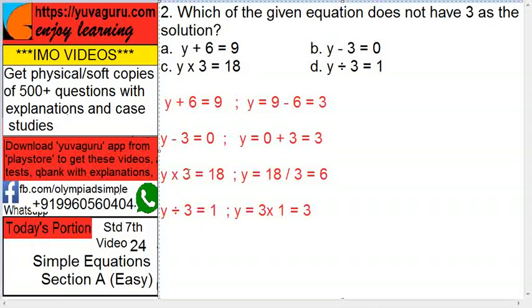Then y times 3 equals 18. So take 3 on this side, it becomes divide. This is multiply, so it becomes divide. So 18 divided by 3, now this is 6. So this is the answer required, does not have 3 as the answer. So c is the answer.